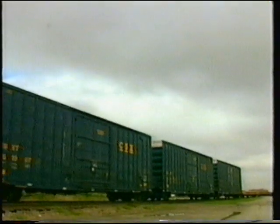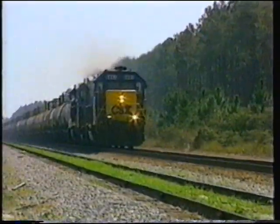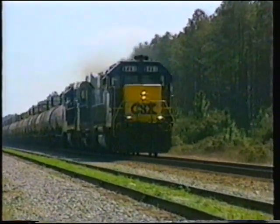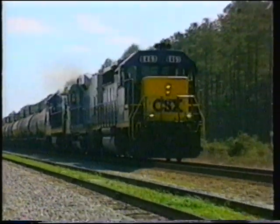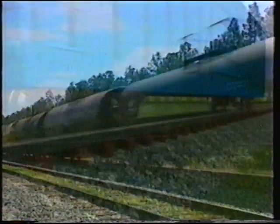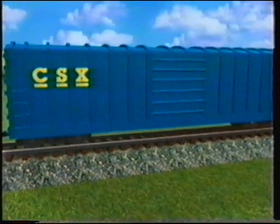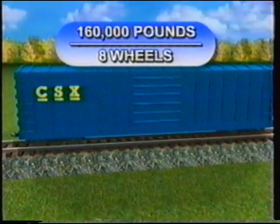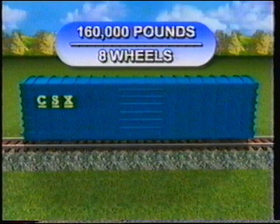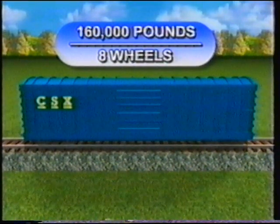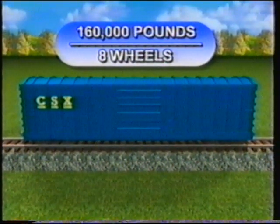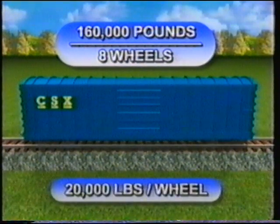Provided the car or locomotive is not rocking or bouncing, the vertical force of a wheel on a rail is basically constant. For a rail vehicle on straight, level track, the vertical force of each wheel equals the gross weight of the vehicle divided by the number of wheels. For an 80-ton boxcar — 160,000 pounds divided by 8 wheels — and assuming the load is evenly distributed, the vertical force for each wheel would be 20,000 pounds.